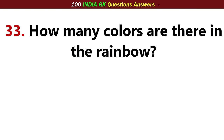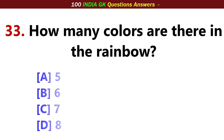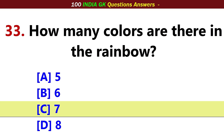How many colors are there in the rainbow? Option C: Seven.